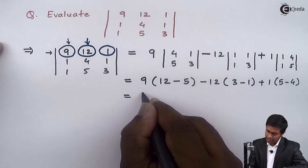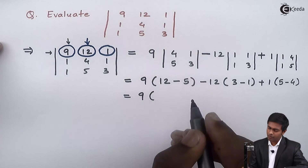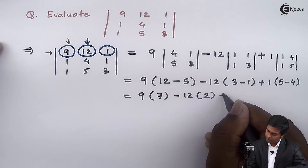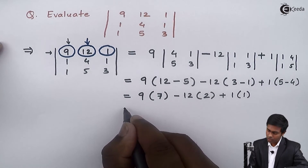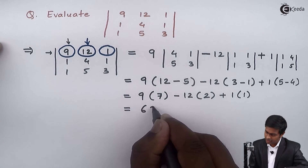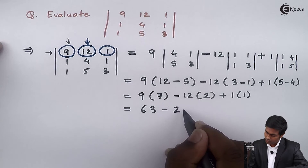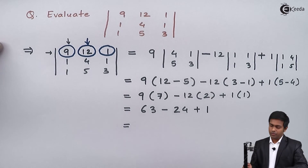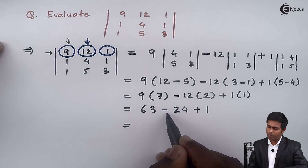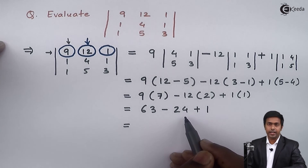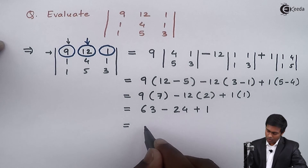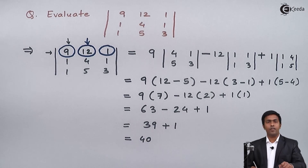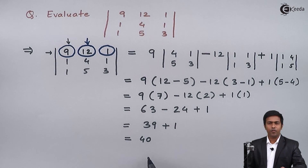So we get 9 as it is. 12 minus 5 is 7, minus 12 times (3 minus 1), that is 2, plus 1 times (5 minus 4), that is 1. This gives 9 into 7 = 63, minus 12 into 2 = 24, plus 1. So 63 minus 24 is 39, plus 1, giving us 40. The value of the 3 by 3 order determinant is 40. Thank you.